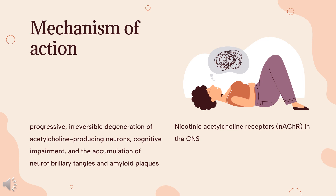Nicotinic acetylcholine receptors (nAChRs) in the CNS are mostly expressed at the presynaptic neuronal membrane to control the release of multiple neurotransmitters such as ACh, glutamate, GABA, dopamine, serotonin, and norepinephrine. Agonists of nAChRs improve performance in cognitive tasks, while antagonists of nAChRs impair cognitive processes. Some studies show a decrease in the expression and activity of nAChRs in patients with AD, which may explain the reduction in central cholinergic neurotransmission in these patients.